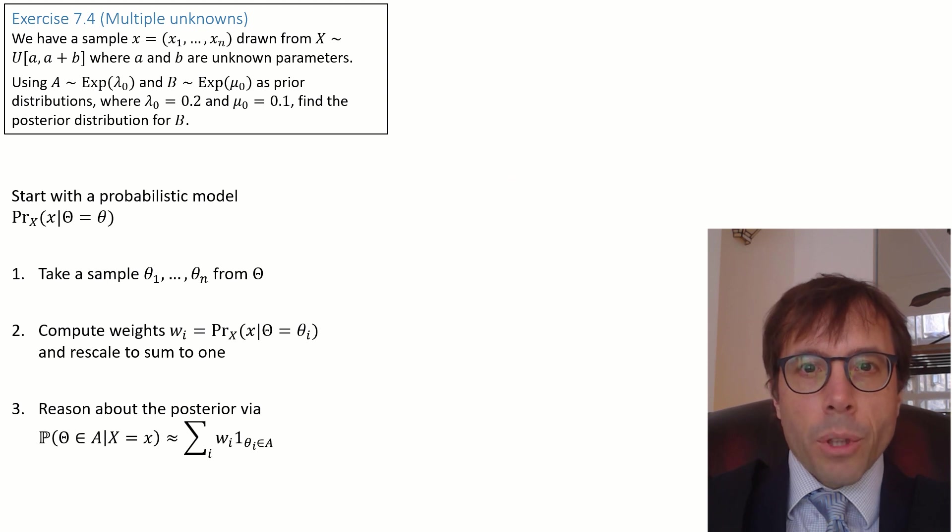Here's the example. We have a sample of values X1 up to Xn, drawn from a uniform distribution in the range A to A plus B, where A and B are unknown parameters. OK, we're being Bayesians here. We're going to treat unknown parameters as random variables. Either we have to pluck them out of thin air ourselves, or we look for them in the question. And this question tells us precisely what to use. Next, the part of the question that might be confusing. It asks us, find the posterior distribution for B. You might have alarm bells going off now. OK, I want to find the posterior for B, so I should write out the prior for B. But then where does A come into the picture? Hold tight, stay focused, and just follow the steps exactly as we put them up before.